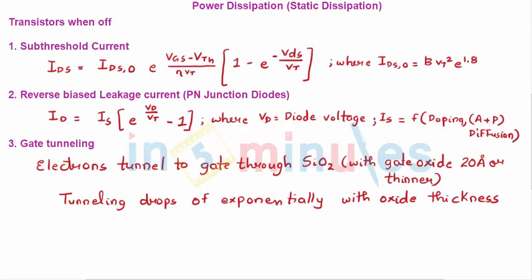When the transistors are off, some current is still flowing in the circuit. Sub-threshold current occurs because when VGS is less than the threshold voltage Vt, ideally the current should fall to zero, but it does not drop linearly — it drops exponentially — and it is a function of the threshold voltage. As threshold voltage reduces, sub-threshold current increases exponentially.